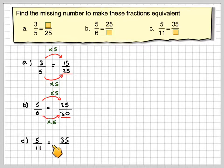C, 5/11 equals 35 over something. How do we get from 5 to 35? We multiply by 7.